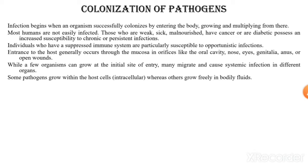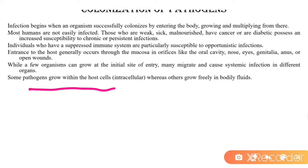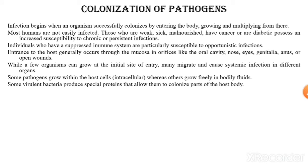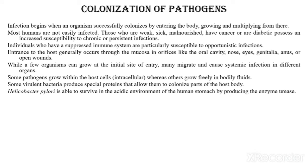Some pathogens grow within the host cells whereas others grow freely in bodily fluids. Some bacteria produce special proteins that allow them to colonize parts of the host body. Helicobacter pylori is able to survive in the acidic environment of the human stomach by producing enzymes such as urease.